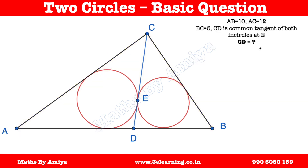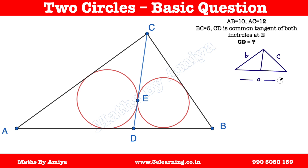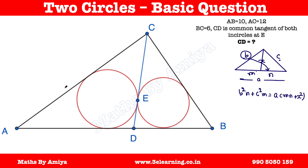If you have a triangle and you know all the values — say side B, side C, and complete side A, with distances M and N (not a ratio, actual values) and cevian X — then Stewart's Theorem states: B² · N + C² · M = A · (M · N + X²). In our case: this side is 12, this one is 6, this segment is 2, this one is 8, and the entire length AB is 10.